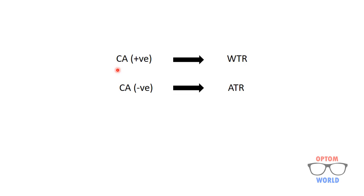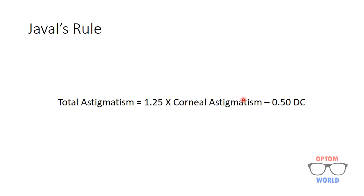One thing that is very important to understand is that the value we will put for corneal astigmatism will have a positive sign if the corneal astigmatism is with the rule, and it will have a minus sign if the corneal astigmatism is against the rule. In this formula it is negative because lenticular astigmatism is against the rule.